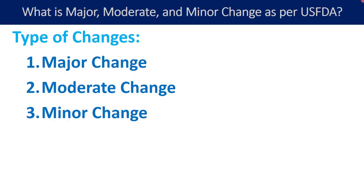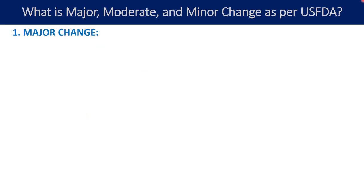There are three types of changes. The first one is major change, the second one is moderate change, and the third one is minor change. Let us understand each change with the definition and some examples, starting with the major change.